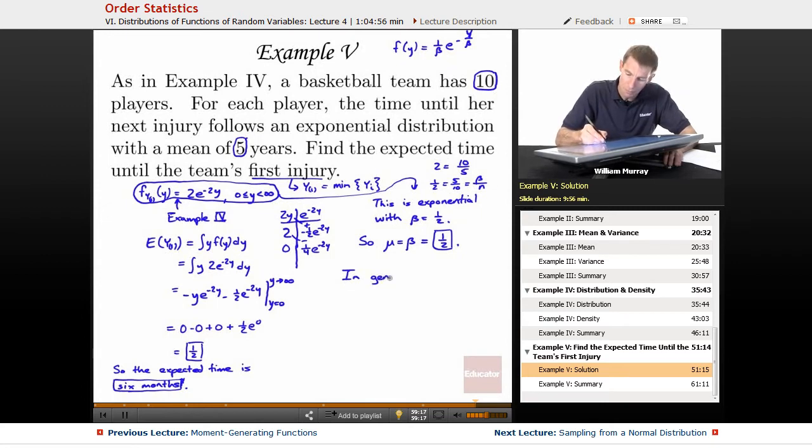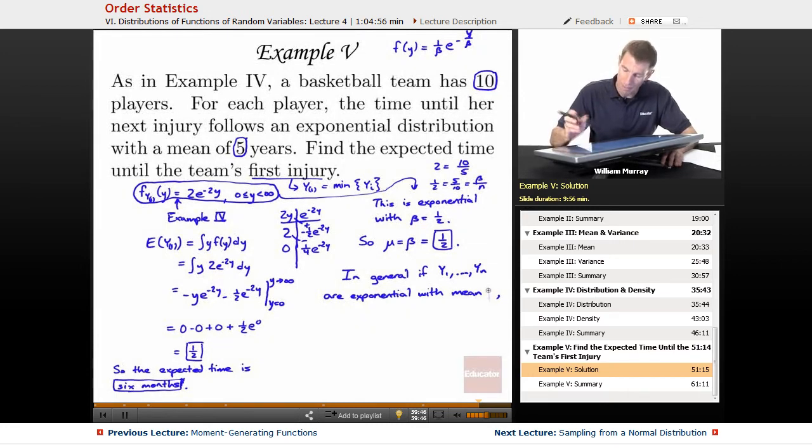So, in general, if y1 up through yn—I'm going to try to write this in general here without making reference to specific numbers. In general, if y1 through yn are exponential with mean beta, then y1, the minimum of the yi's, the minimum of y1 through yn, is exponential, and we can say what the mean of that is. The new mean is going to be beta over n.